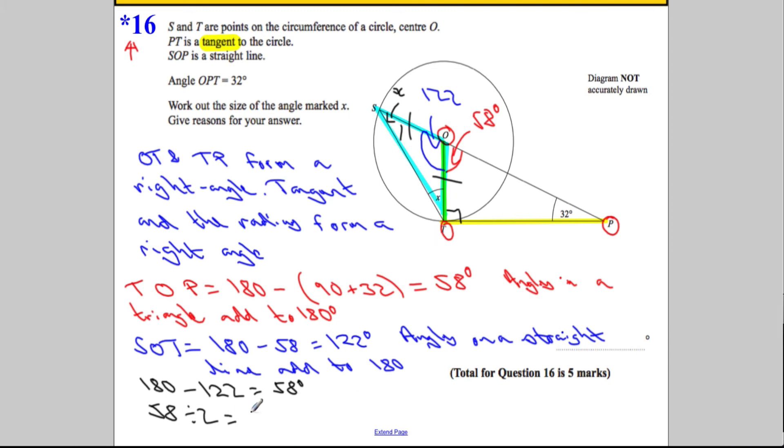How did I know that? The base angles in an isosceles triangle are equal.